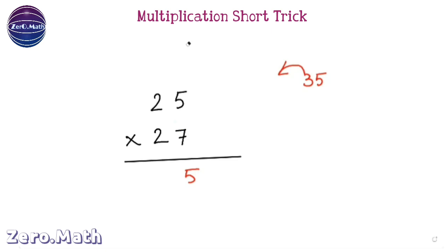In the next step, we have to cross-multiply. 2 times 7 is 14. And then 2 times 5 is 10. And then we have to add it. If we add, we are getting 24. But remember, we have a carry 3 here. So just add 3 to this 24. So answer is 27.